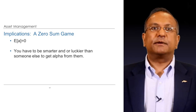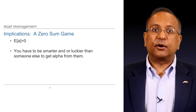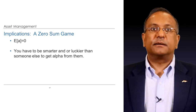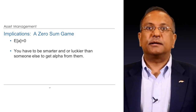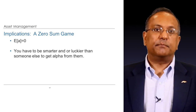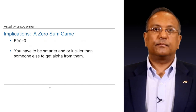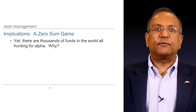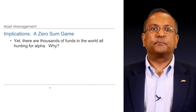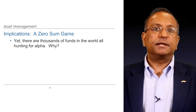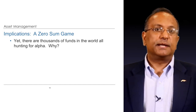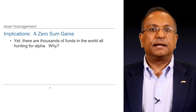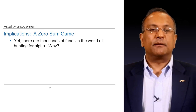What are the implications of this zero-sum game? If the expected alpha is zero and there are costs, you realize that you have to be smarter or luckier than other investors to get alpha from them. Yet there are thousands of funds in the world all hunting for alpha. Why? Everyone actually thinks they have some edge, and importantly they get paid to try. But one certainty is that many, many of these will end up being alpha providers — meaning they give alpha away to others.